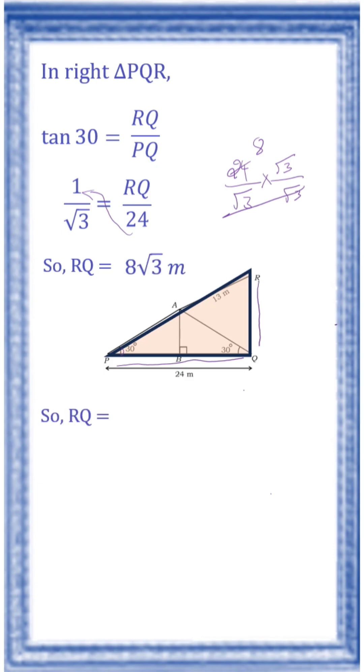But they have given that root 3 is equal to 1.7. So 8 into 1.7, that is equal to 13.6 meter. So height of the tower RQ is equal to 13.6 meter.